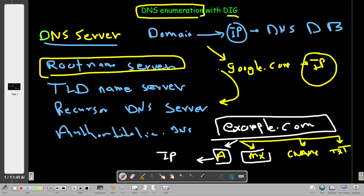MX records contain information about the email server — whether it's local, Microsoft, Google, Yandex, or Yahoo. CNAME records contain entries such as www, so if the domain uses www you'll find it under the CNAME record.